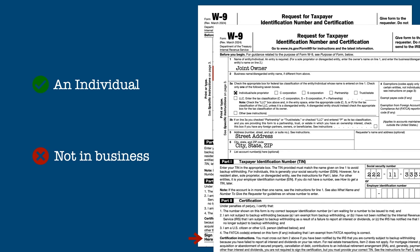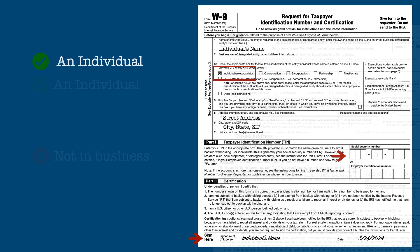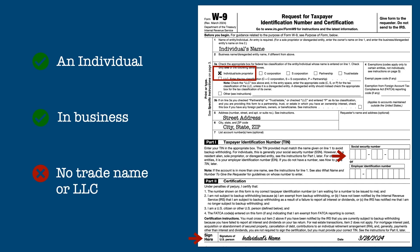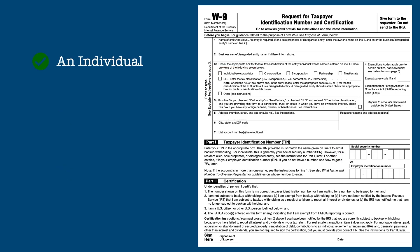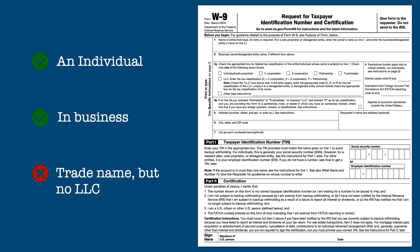For joint accounts or ownership, each joint owner must fill out the form. For an individual that is in business but does not use a trade name or have an LLC, the form is filled out the same way. For an individual that is in business and uses a trade name but doesn't have an LLC, the name of the individual is entered on line 1 and the trade name is entered on line 2. The individual/sole proprietor box is checked, and the individual provides their Social Security Number in Part 1 and signs Part 2.